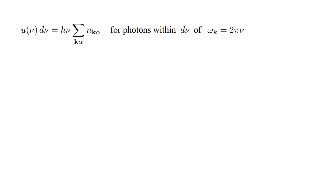To see if our results are consistent with Einstein's formula, we need to calculate the radiation density U of nu. This times d-nu is the total energy per unit volume of all photons with a frequency within d-nu of nu. That energy is h-nu times the sum of occupation numbers N-k-alpha for all k-values within that interval.